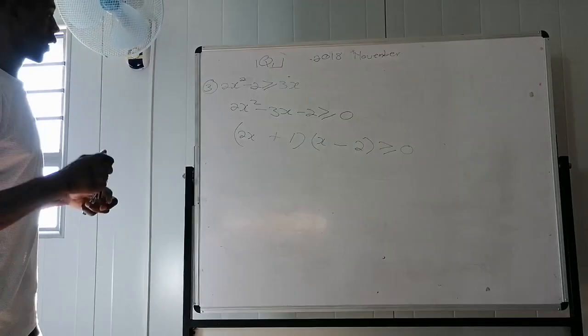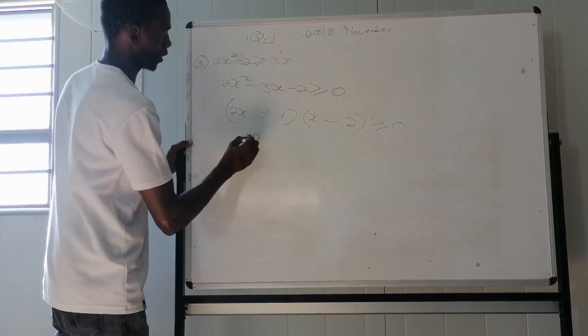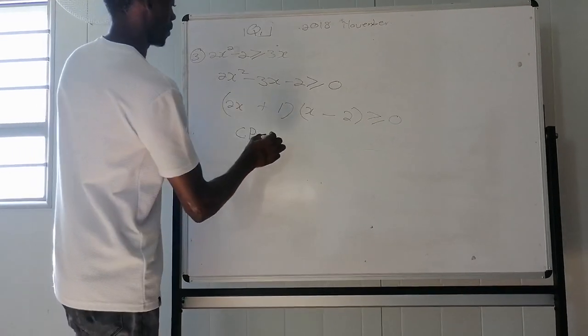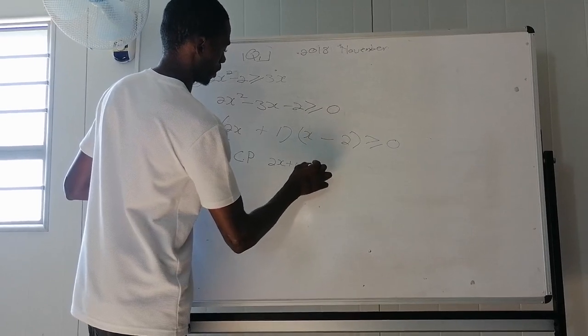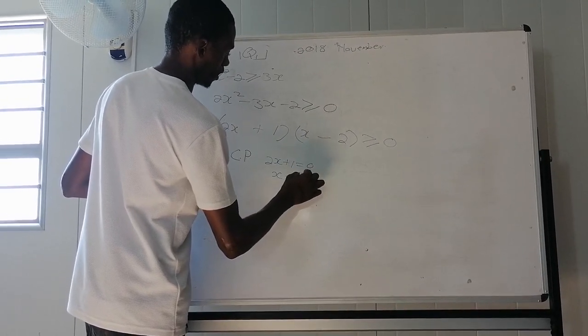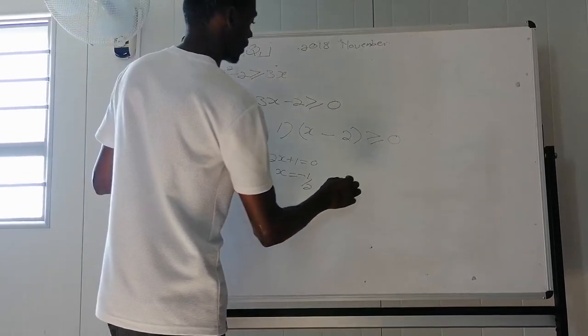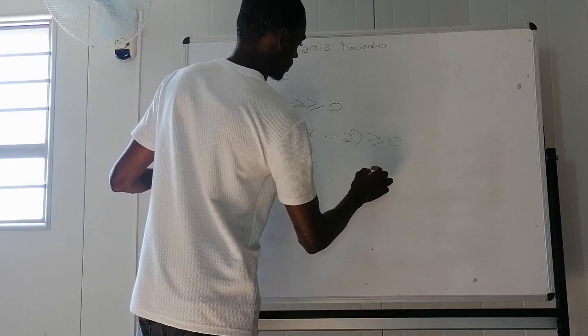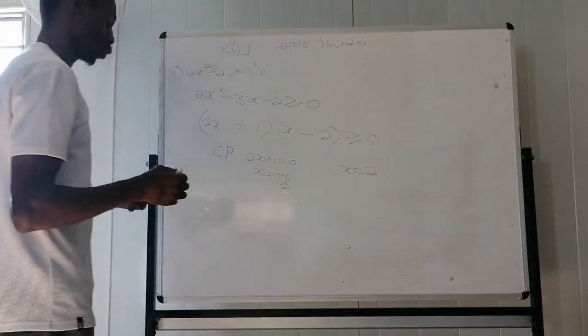So 2 times 2 is negative 4 minus 1 is negative 3. So this one will be positive because positive and negative is negative. So it's greater or equal to 0. So now we have our critical values, our critical points. We have 2x plus 1 equals to 0, which means our x is equal to negative 1 over 2. That is our first point. Then the second point is x equals to 2.